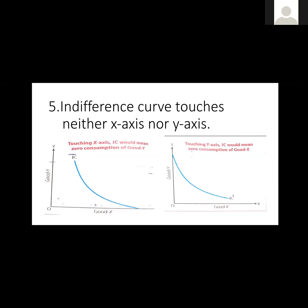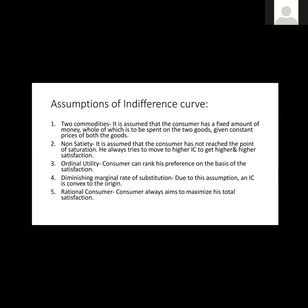If the IC touches an axis, it means the bundle has zero of one good — like 0-Y or X-0 — which doesn't exist under this framework. Now, the assumptions of the indifference curve. Assumption 1: two commodities. It is assumed that the consumer has a fixed amount of money, all of which is to be spent on two goods at constant prices. The consumer's income should be constant and spent on the two commodities.